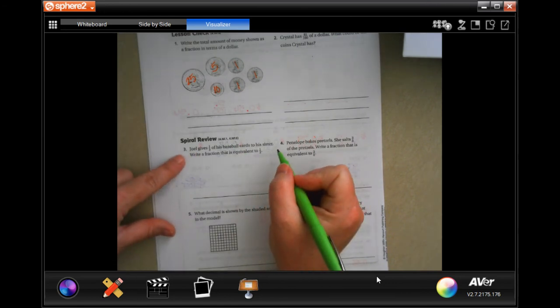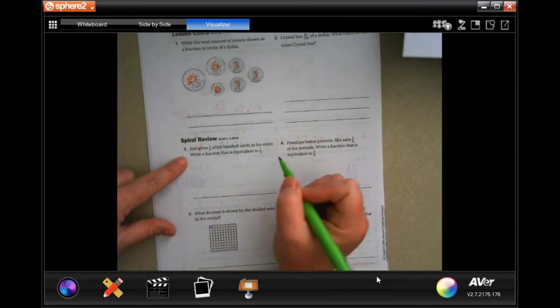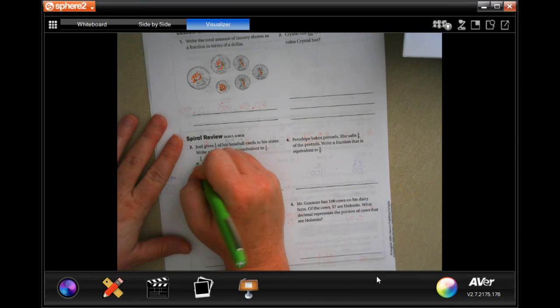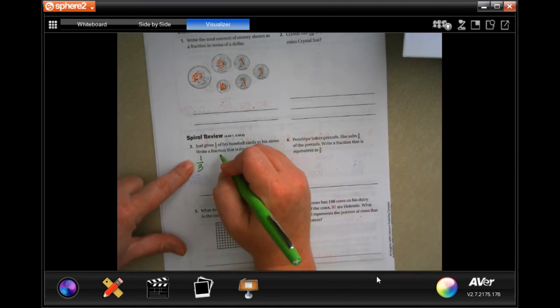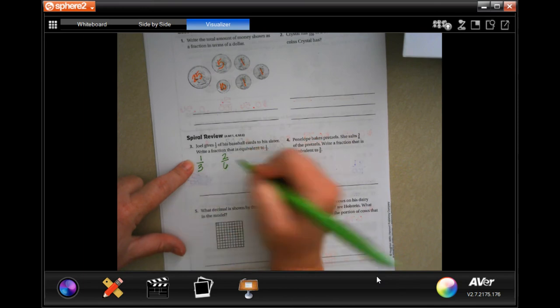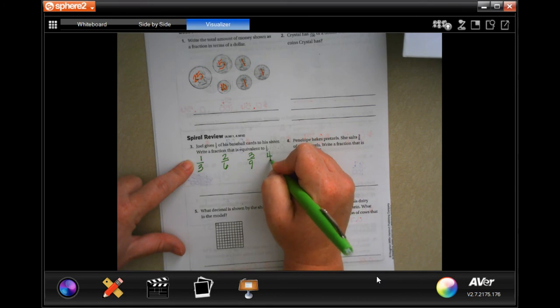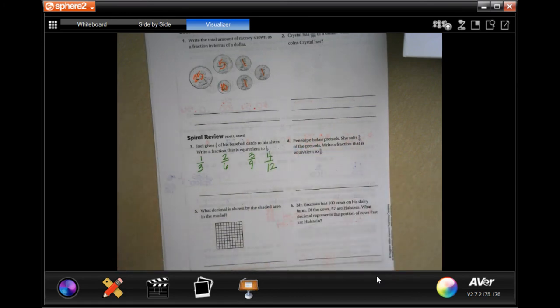Joel gives a third of his baseball cards to his sister. Write a fraction that's equivalent to one-third. Well, one-third. And if we multiply both of those by two, then we would get two over six. If we multiplied it by three, we would get three over nine. If we multiplied it by four, we would get four over 12. You can write any of those. Any of them.